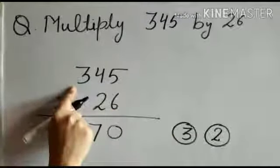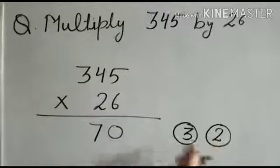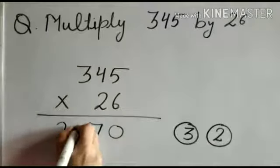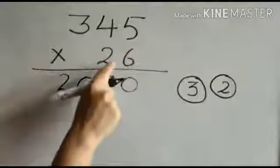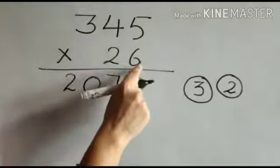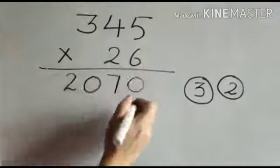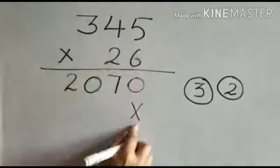Then 6 times 3 is 18. 18 plus 2 we got 20. We have done the multiplication with 6, so we put a cross under the 6.